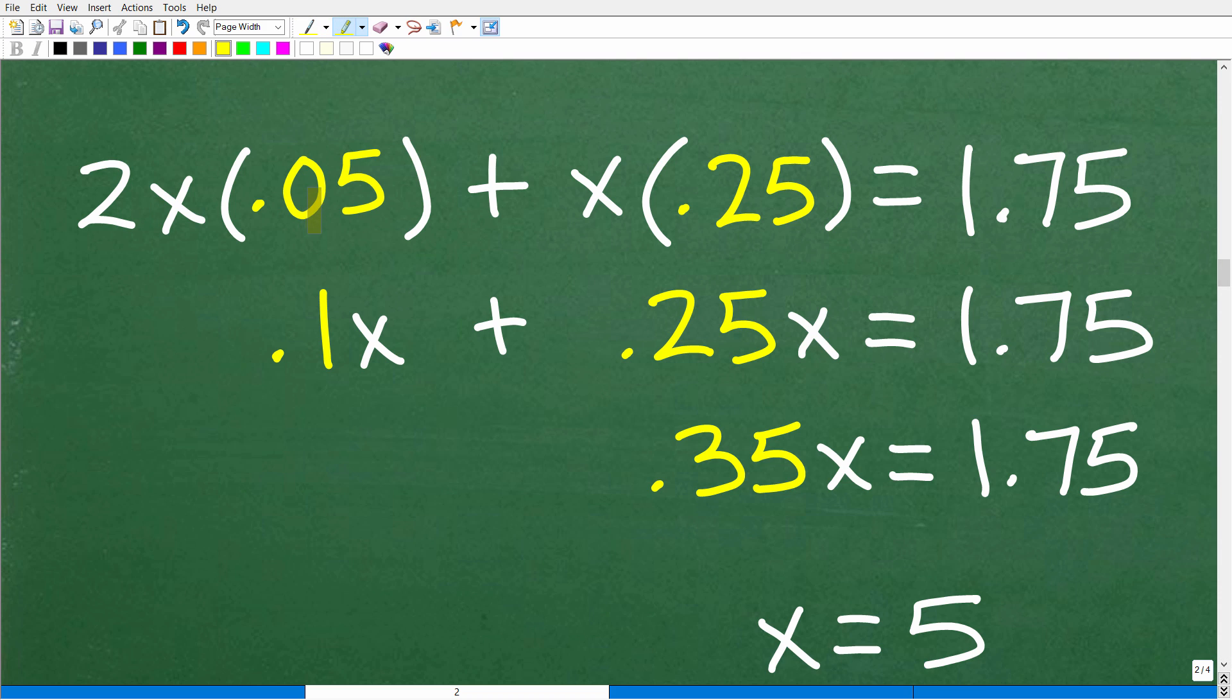Okay. So 2X times 0.05. So we're going to, in our calculator, just take 0.05 times 2. That's going to be 0.1. Now you're not going to write it as X times 0.1. Remember the number or the coefficient will always go in front of the variable. So this is going to be equal to 0.1X. All right. So X times 0.25 is just simply 0.25X. So now we combine like terms 0.1 plus 0.25 is 0.35X is equal to a dollar 75 or 1.75.